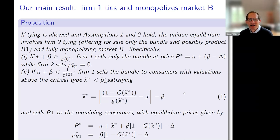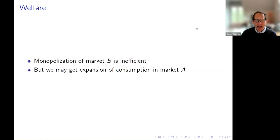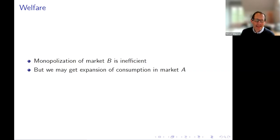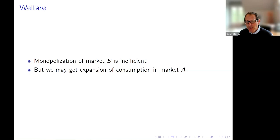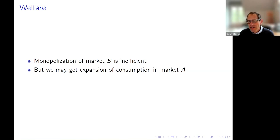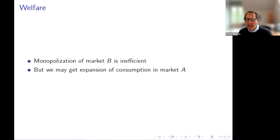On welfare: it can in general be ambiguous. Monopolization of market B is inefficient — because it's monopolized in a market where firm one has the less valuable product. But in the second case I described, we also get an expansion of consumption in market A, and that counterbalances the inefficiency in market B. However, in the first case — where we had full coverage in market A to start with — there's no expansion in market A, so in that case we know the result of tying is inefficient.